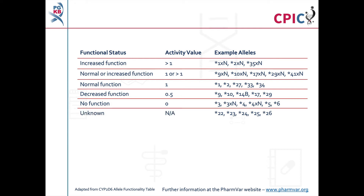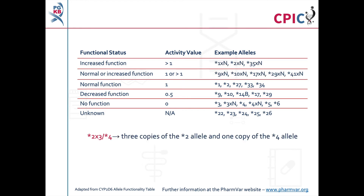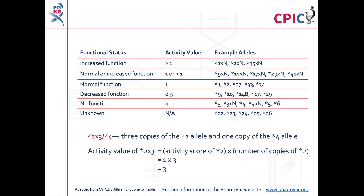It is also important to note that patients can carry multiple copies of CYP2D6. Reports in the scientific literature have described cases where up to 13 copies of CYP2D6 were present in a patient's genome. Alleles present in multiple copies are given the suffix XN, where N is the number of copies present. For example, a patient with the genotype star 2 X3 star 4 has three copies of the star 2 allele and one copy of the star 4 allele. The activity score of star 2 X3 is 1 multiplied by 3, which equals 3. Further information about CYP2D6 alleles can be found at the PharmVar website at www.pharmvar.org.